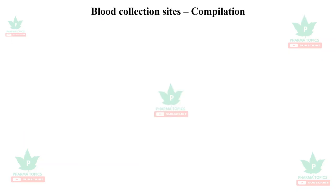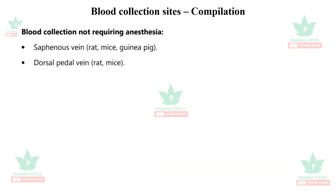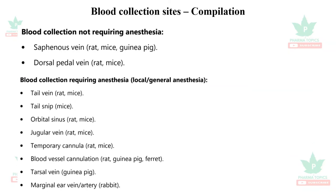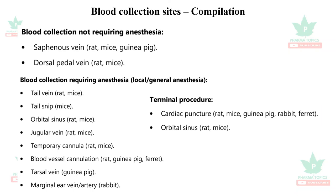A compilation of blood collection sites: without anesthesia — saphenous vein and dorsal pedal vein in rats, mice, and guinea pigs. With local or general anesthesia — tail vein, tail snip, orbital sinus, jugular vein, temporal cannula, and femoral vein cannulation for rats and mice; tarsal vein for guinea pigs; and marginal vein and artery for rabbits. Terminal procedures include cardiac puncture for rats, mice, guinea pigs, rabbits, and parrots, and orbital sinus in rats and mice.